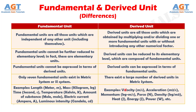Whereas, examples of a few derived units along with corresponding physical properties are: velocity, expressed in meters per second; acceleration, expressed in meters per second squared; momentum, expressed in kilogram meters per second; force, expressed in newtons; density, expressed in kilograms per meter cube; heat, expressed in joules; energy, also expressed in joules; and power, expressed in watts.